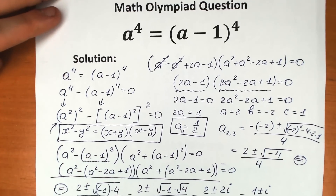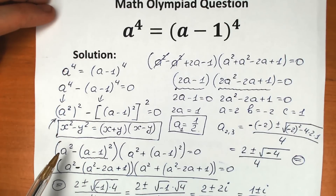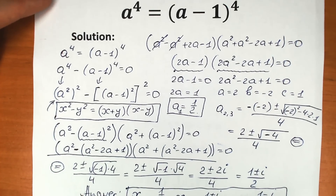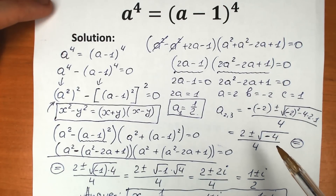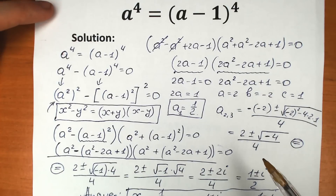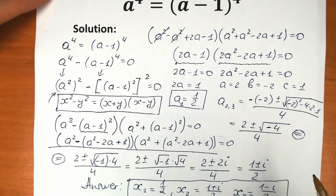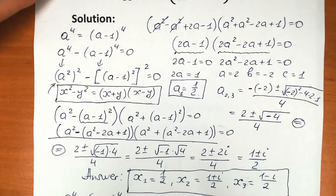Let's go through the steps quickly: first, bring everything to the left side; then apply difference of squares to get two parentheses; solve each parenthesis separately. This gives three roots, not just one half. I hope you understand why we have three roots and what you learned from this great tricky challenge.